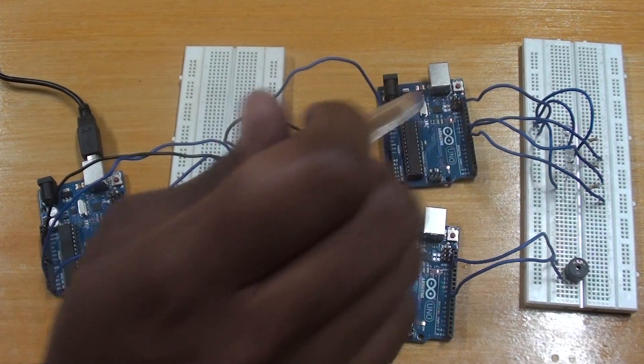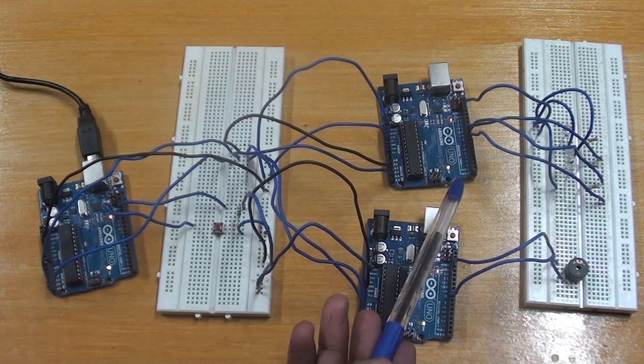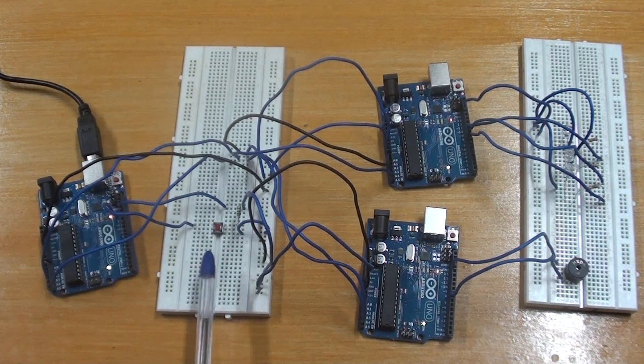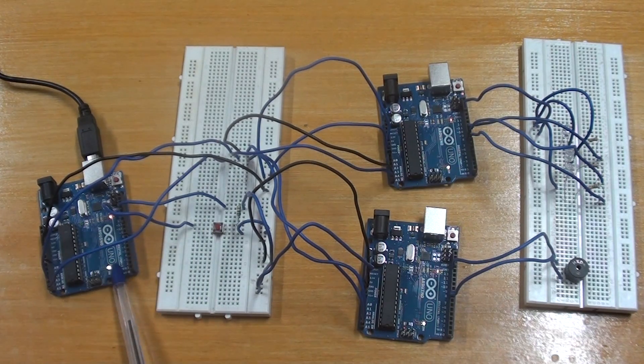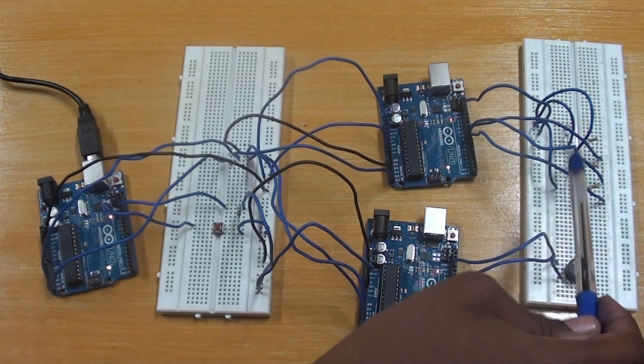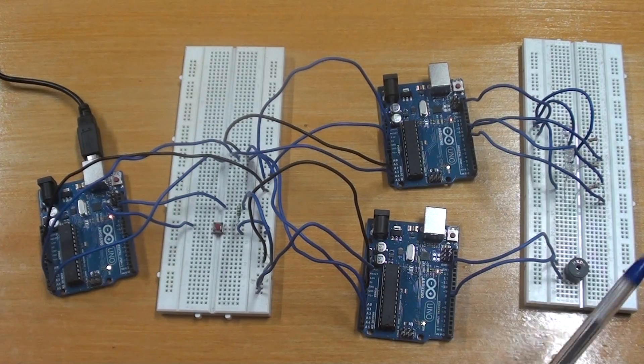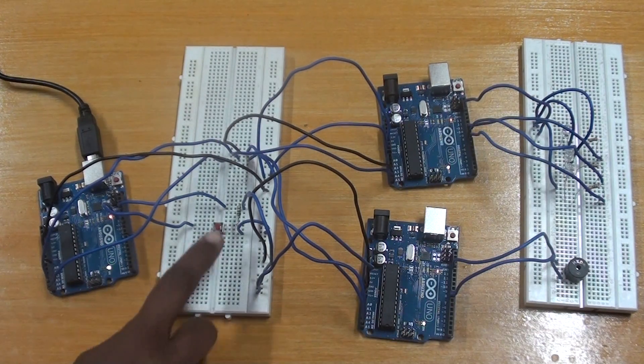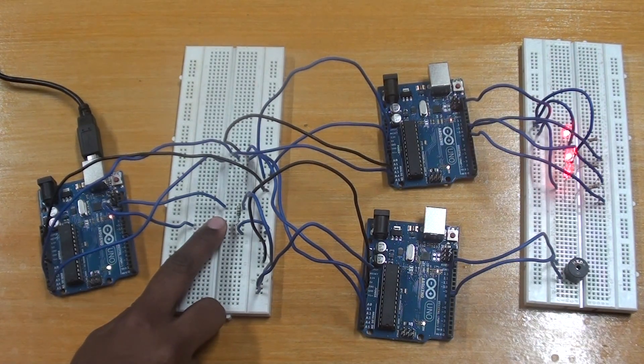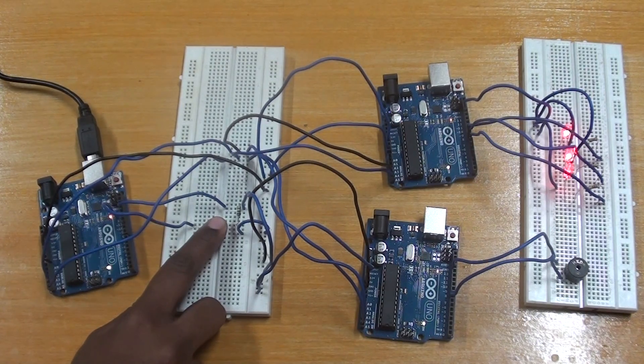This is the master and these two are slaves. Power supply for the slave is provided by the master. Push button is interfaced with master and LEDs are interfaced with slave 1 and buzzer is interfaced with slave 2. When the button is pressed the LED blinks and the buzzer beeps.